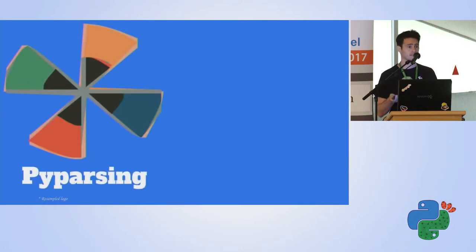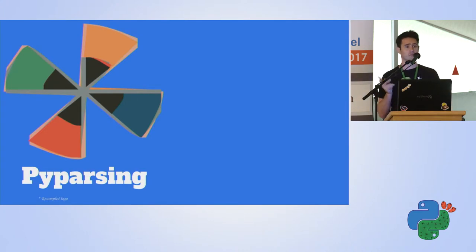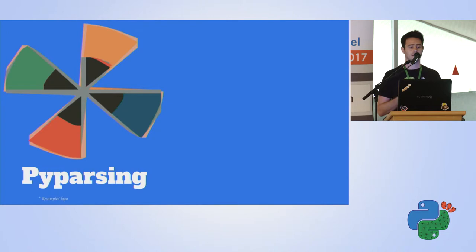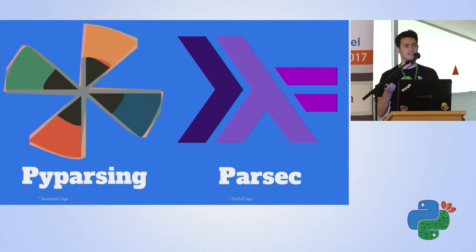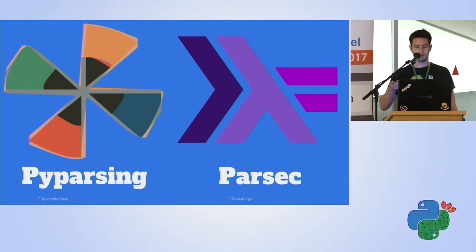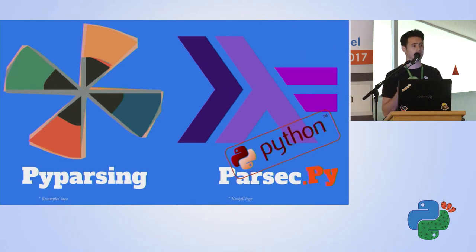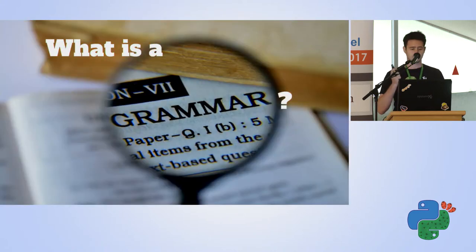The first library is called PyParsing. PyParsing started in 2001 - it's a mature library with lots of documentation and examples. The second library is called Parsec. Parsec is originally a Haskell library, a bit older than PyParsing, but that's not a Haskell con. So we're going to talk about a Python implementation of this library, which is a great implementation. But first, we need to understand what is a grammar.